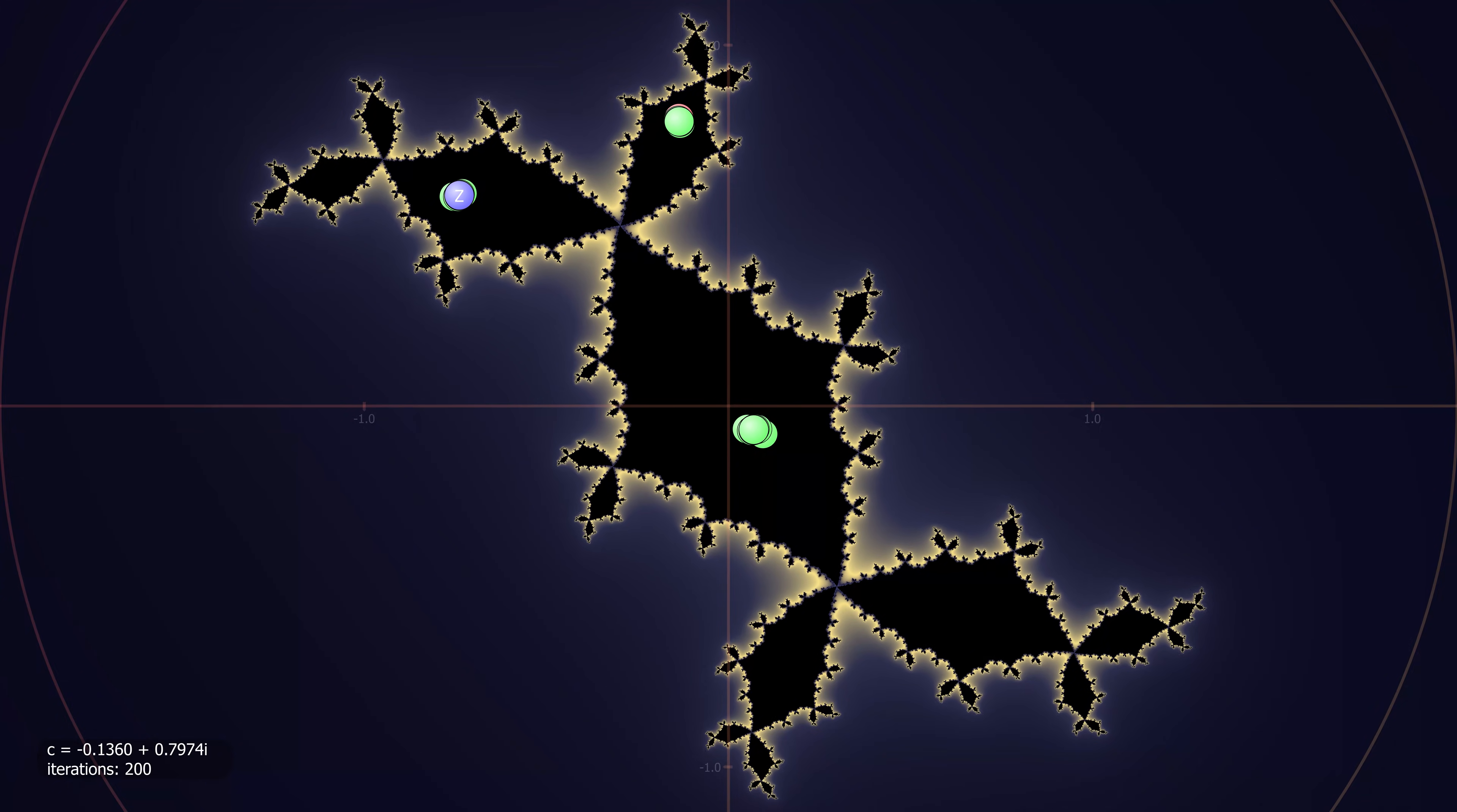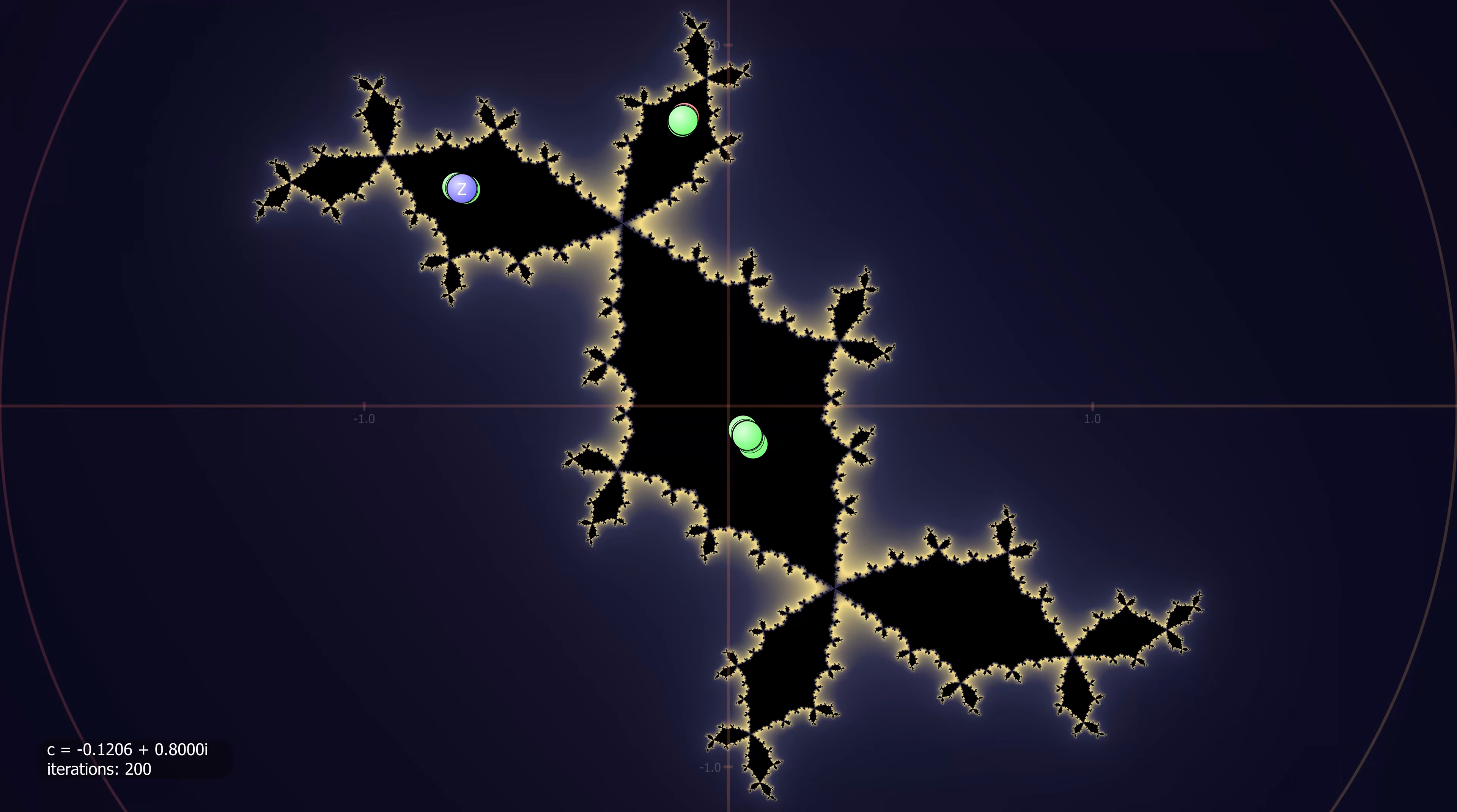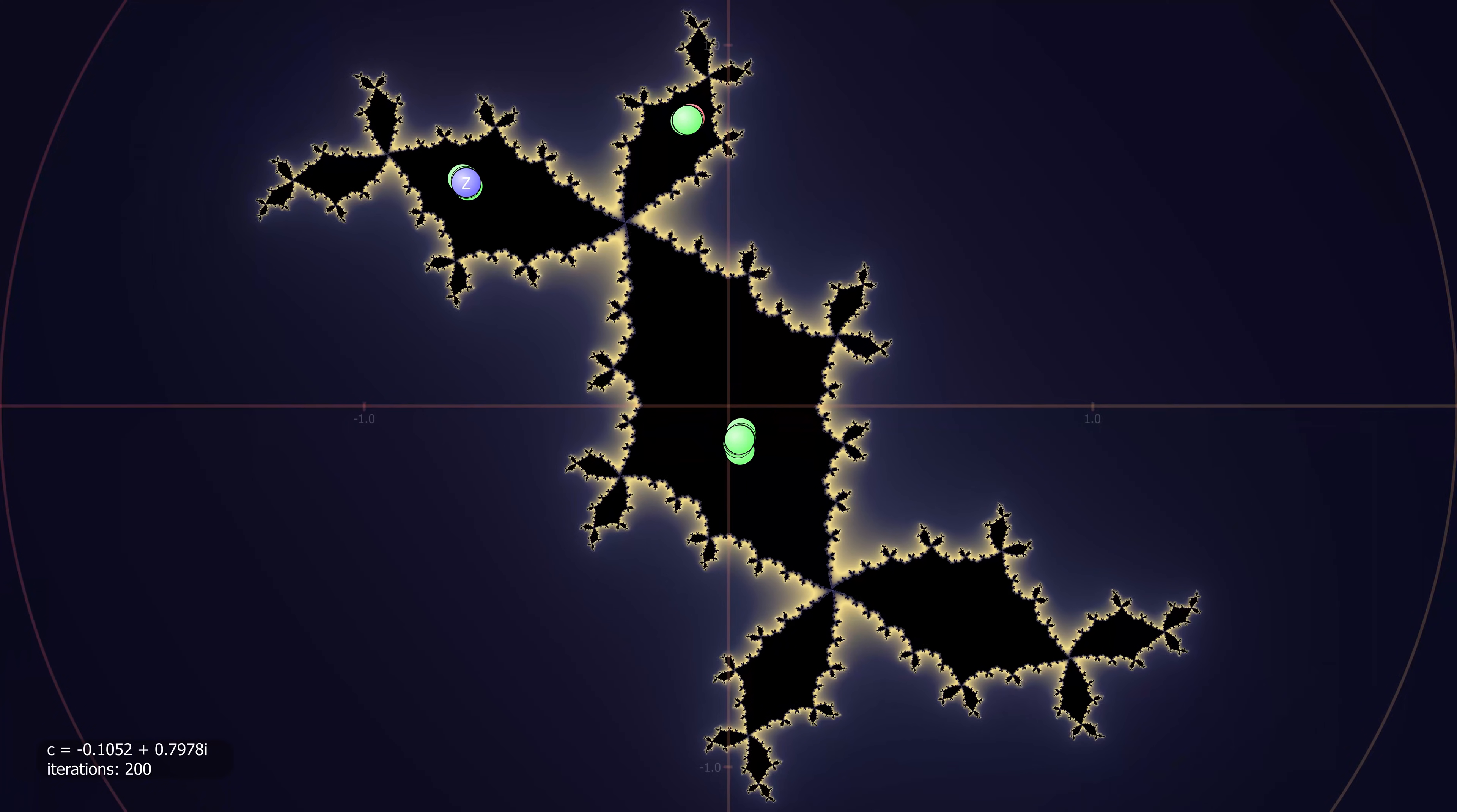Instead, here is a Julia set corresponding to C. Remember that the Julia set changes shape if C changes, so the motion of C kind of makes the Julia set dance. Notice here that all the orbits remain inside the filled Julia set at all times. The Julia set has three-way branching.